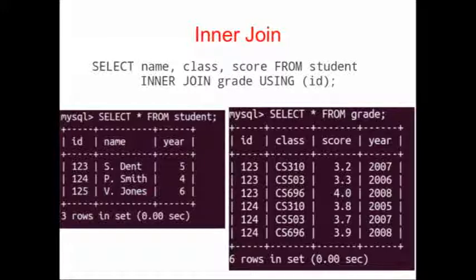Let's take a look at an example. Here we have two tables from our data set: student and grade. The students have an ID, a name, and the year that the student is in their studies. In the grade table, we have the ID, which is the foreign key to the student's ID, the class that the student has taken, the year that the student took that class, and the score that the student received in that class.